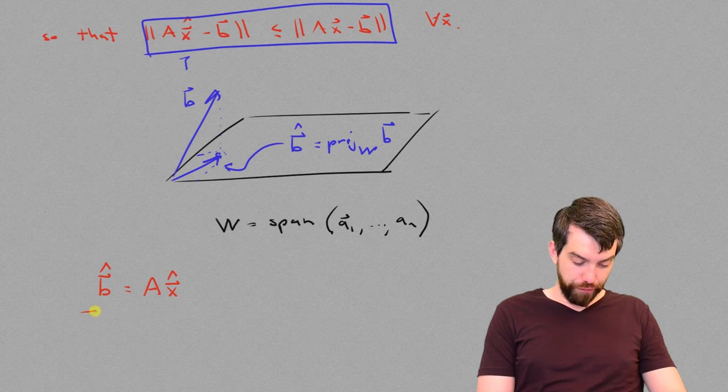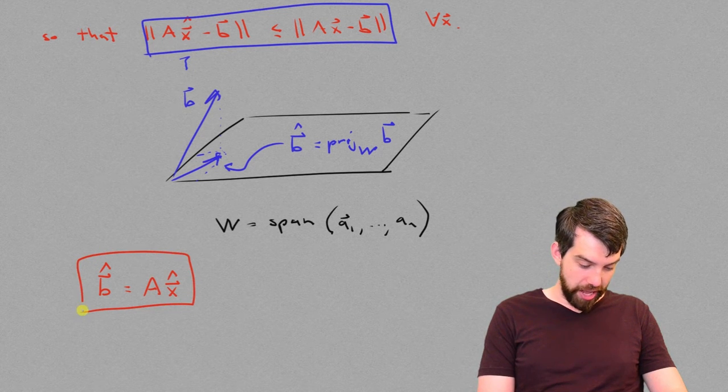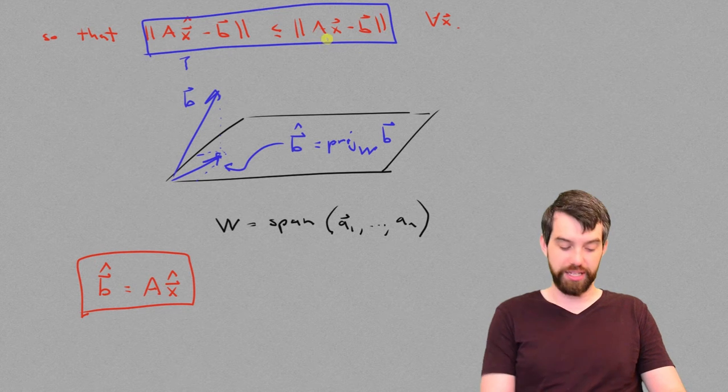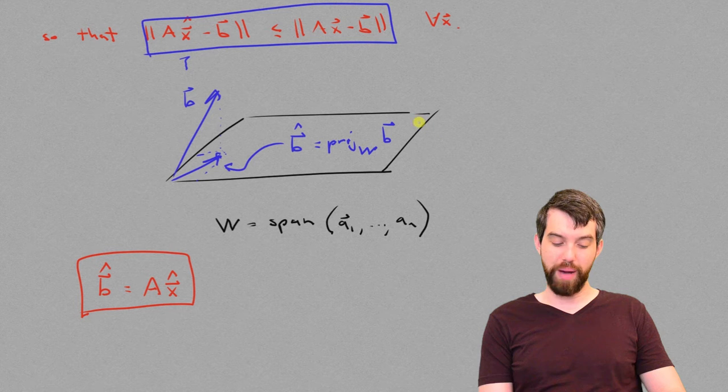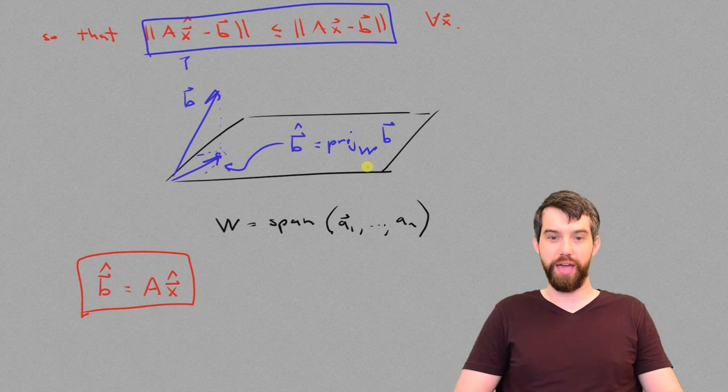So, if I look at this formula that I've gotten and I compare it to my original ax equal to b, b hat is the closest vector to my subspace, the span of my columns of a,